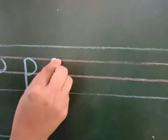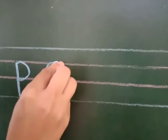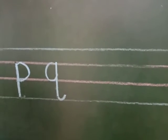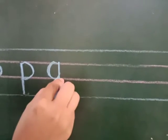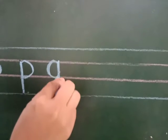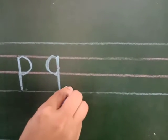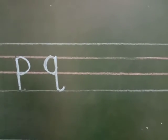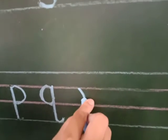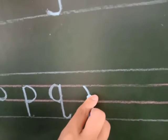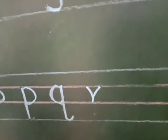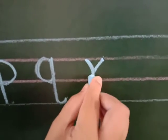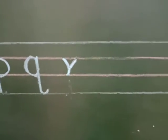Now how to write small q. Again a circle, standing line, and you have to just turn it like this — a curve. Half circle, standing line, again a little bit of curve. It becomes small q. Small r: see, a curve and just a slanting line. A little curve and a slanting line. Small r.